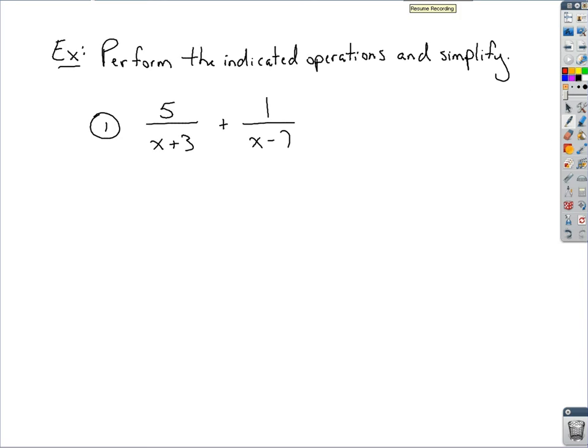If we're asked to add these rational expressions and the denominators are not the same, what we're going to do is set up one big fraction where we take our denominators and multiply those together.